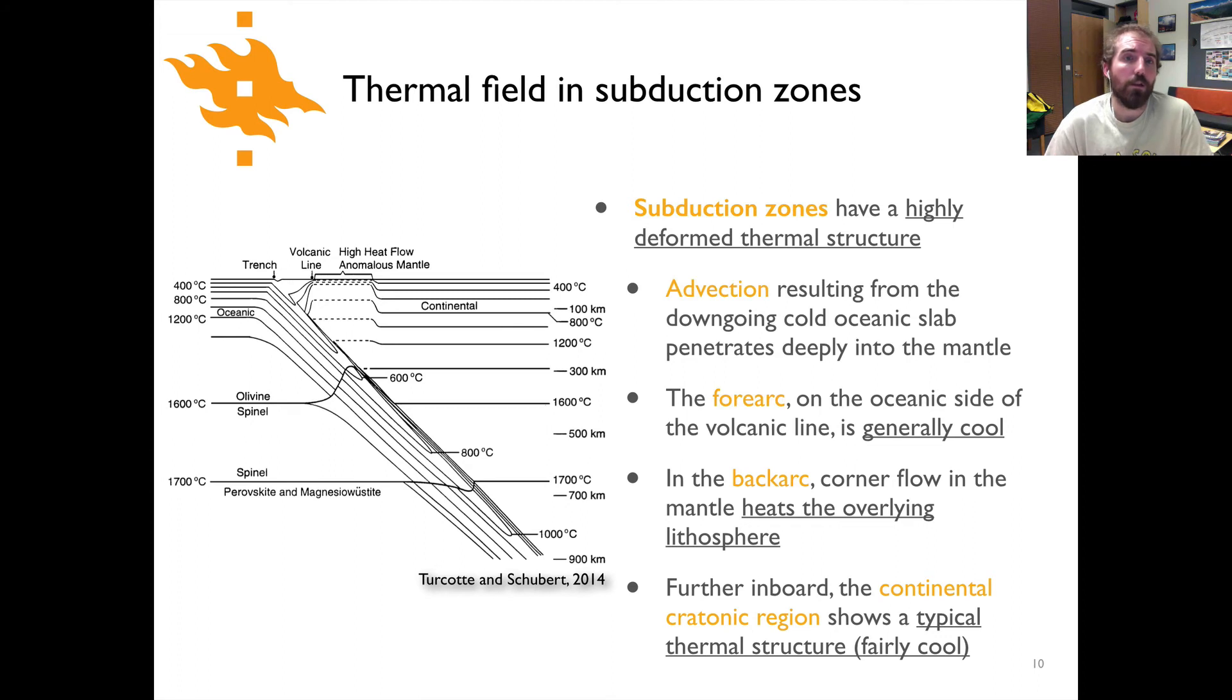We can also look at the thermal field in subduction zones. There are a few different things to consider. First off, they're going to have a highly deformed thermal structure. We have a subducting slab that's basically sinking down into the mantle, and this slab is relatively cold, being that it was at the surface relatively recently. As it's being pushed down or sinking under its own weight, it's dragging with it relatively cold temperatures to quite significant depth. You can see 600 and 800°C at depths of 400 or 500 kilometers, where the surrounding asthenosphere is at temperatures almost a thousand degrees hotter.